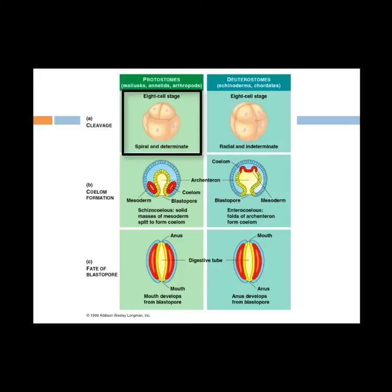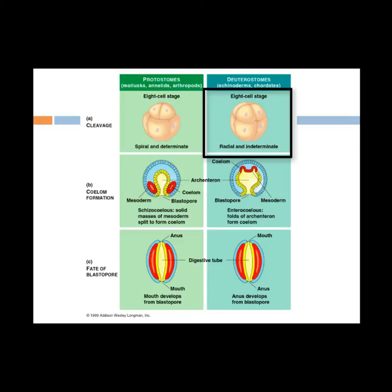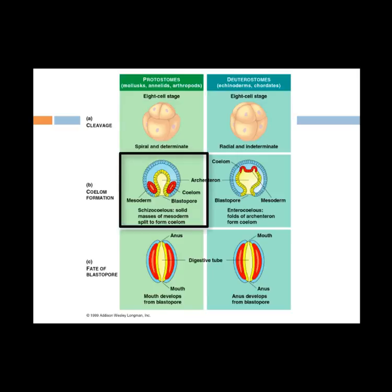Protostomes have spiral cleavage in early embryos, meaning the planes of cell division are diagonal to the vertical axis of the embryo. They also have determinate cleavage, which determines the fate of each cell very early, so if one cell is removed it will not develop into an embryo. In protostomes, a solid mass of mesoderm splits to form the coelom cavity — this is called schizocoely.